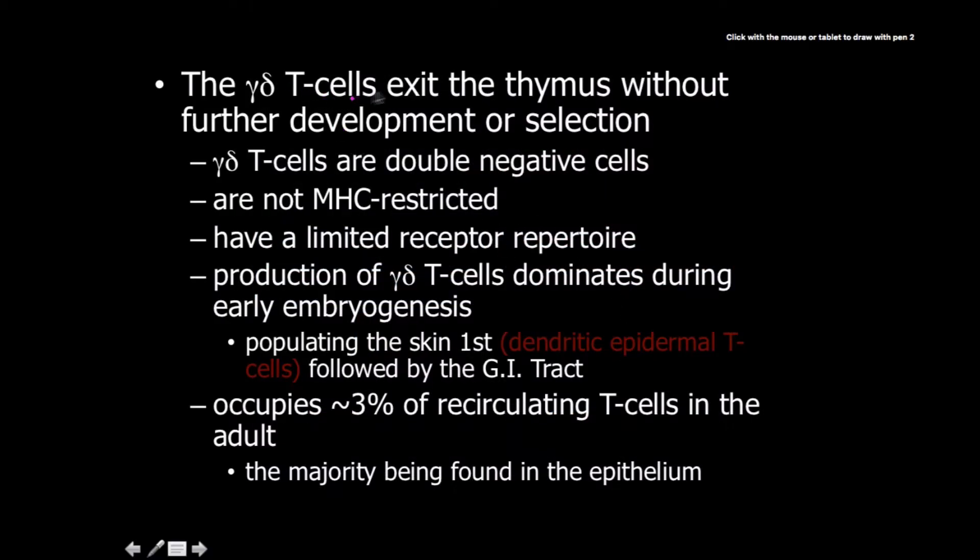The delta-gamma T cells exit the thymus without further development. They are double negative cells because they didn't have the rearrangement of the alpha chains, which is necessary to start that whole CD4 and CD8 production process. They're not MHC restricted. They have a very limited receptor repertoire. Production of delta-gamma T cells dominates during early embryogenesis, which makes me think they are vestigial structures that came before the alpha-beta ones. They populate the skin and barriers. They comprise approximately 3% of circulating T cells in adults, with the majority found in the barriers themselves.